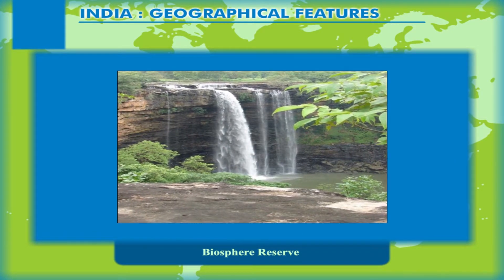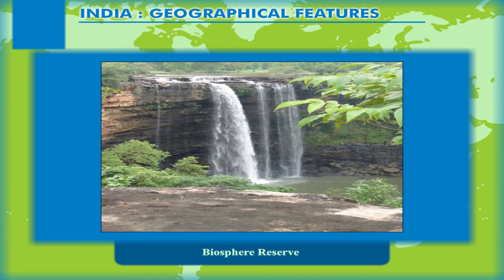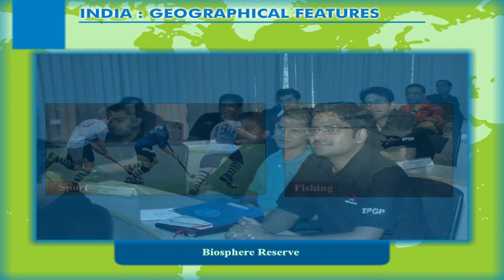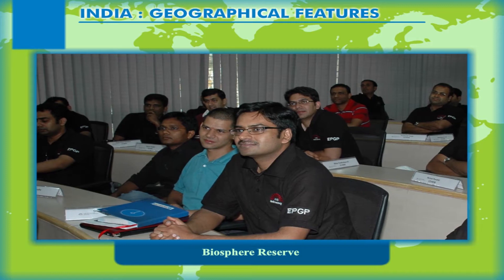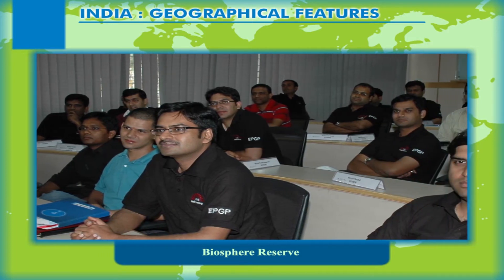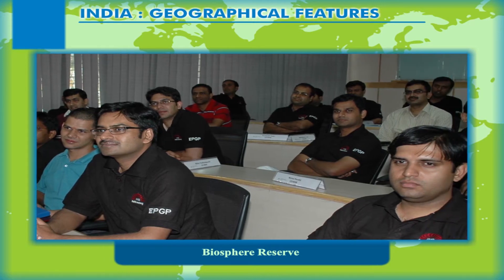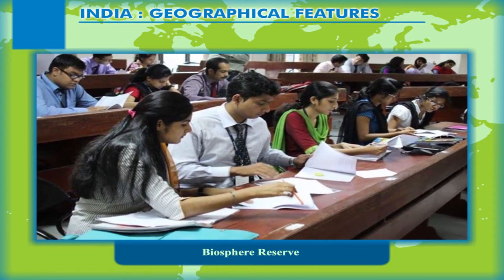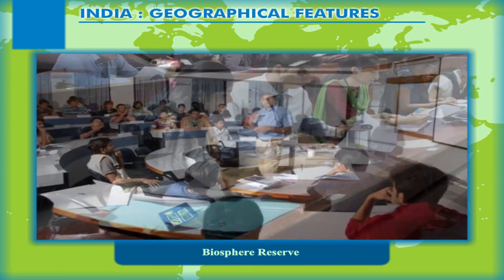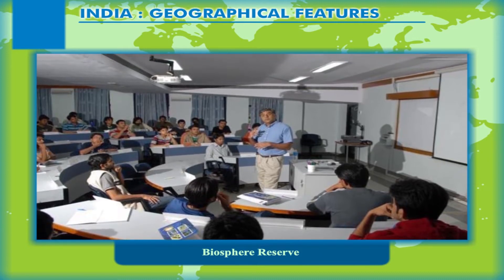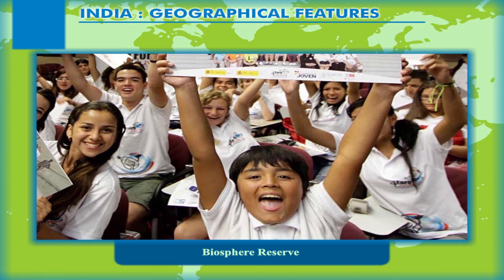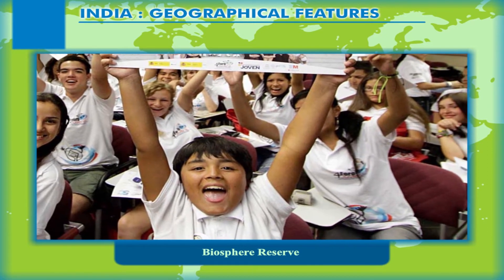Biosphere Reserve: The Man and the Biosphere Programme (M.A.B.) of UNESCO was established in 1971 to promote interdisciplinary approaches to management, research, and education in ecosystem conservation and sustainable use of natural resources. The primary achievement of the M.A.B. program is the creation in 1977 of the World Network of Biosphere Reserves. This world network is more than a listing — Biosphere Reserves exchange knowledge and experiences on sustainable development and innovations across national and continental borders. They exist in more than 100 countries across the world, including India. Biosphere Reserves are areas supposed to develop innovative approaches.